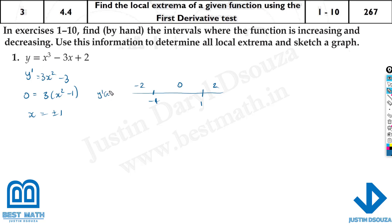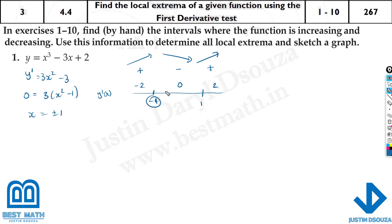This is y' of x. If you substitute minus 2, minus 2 squared is 4, times 3 gives a positive value. We are not interested in the exact value, just whether it's positive or negative — here it's positive. When you put 0, it's negative. And again, when you put 2, it'll be positive. So it's increasing, decreasing, and increasing.